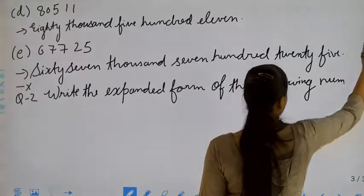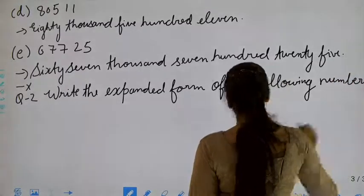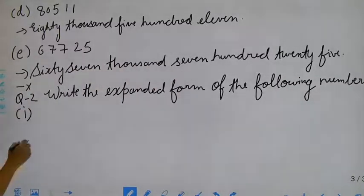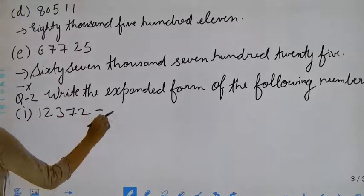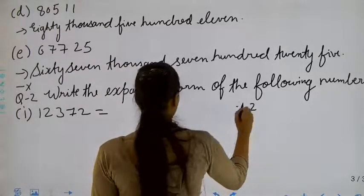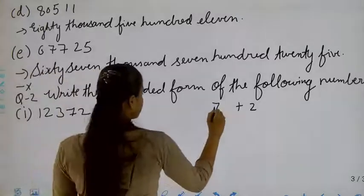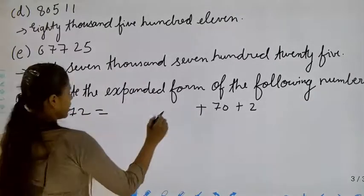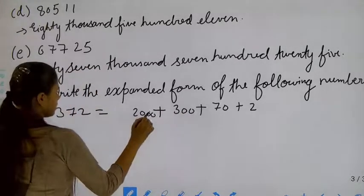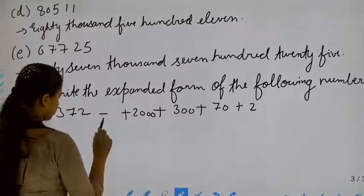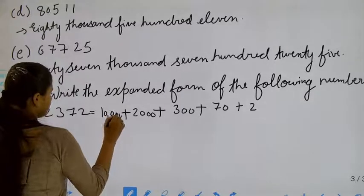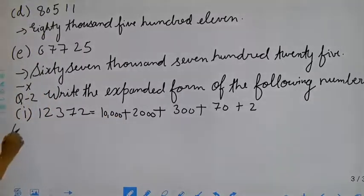Following numbers. First one is twelve thousand, three hundred seventy-two. Basically students, we have to start from the right-hand side — ones, then tens, then hundreds, then thousands, and then ten thousands. It will be ten thousand. Now move to the next part, that is the second part.